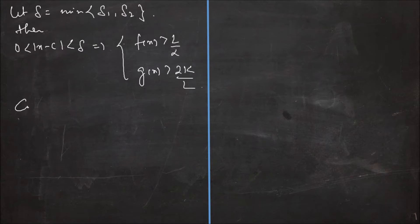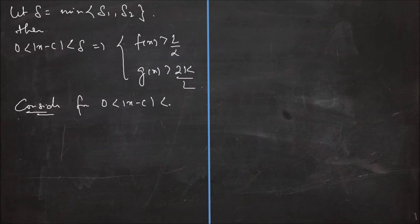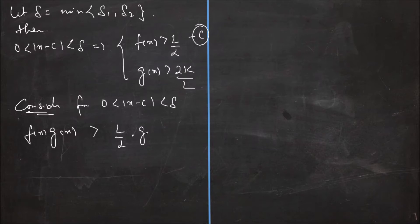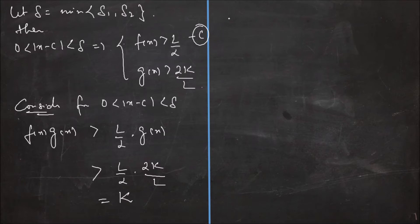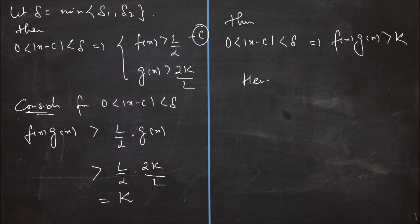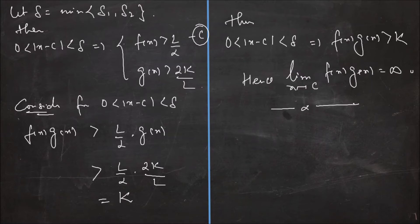Consider: for 0 less than |x minus c| less than delta, f(x) times g(x) is greater than L by 2 times 2k by L, which is equal to k. Thus 0 less than |x minus c| less than delta implies f(x)g(x) greater than k. Hence limit x tends to c of f(x)g(x) is equal to infinity. This completes the proof of question number 11.